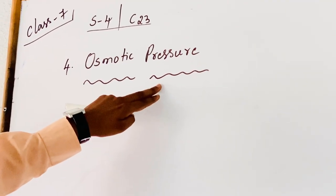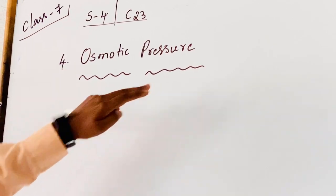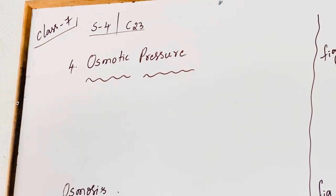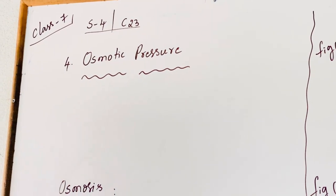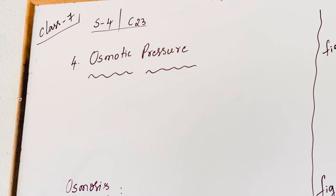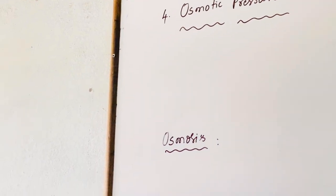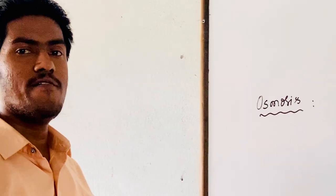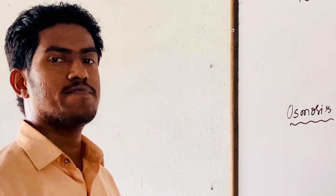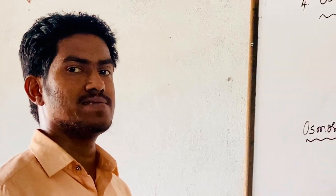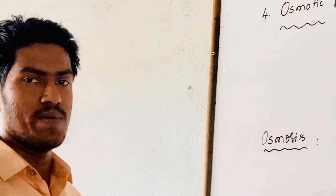Osmotic pressure is one of the Colligative Properties. Colligative properties are the properties whose physical and chemical characteristics of a solution depend only upon the number of particles of solute, but not on the nature of the solute. Such properties are known as Colligative Properties.